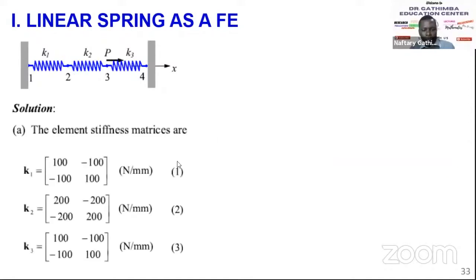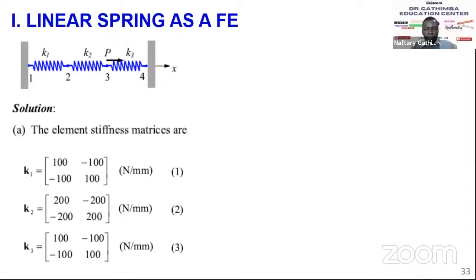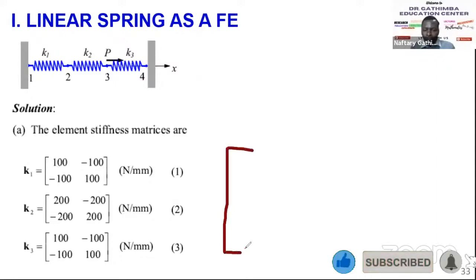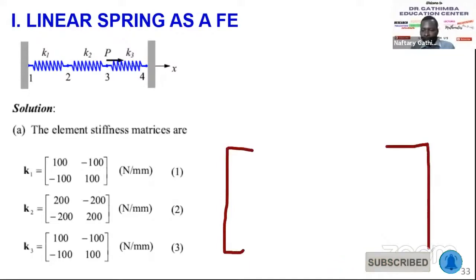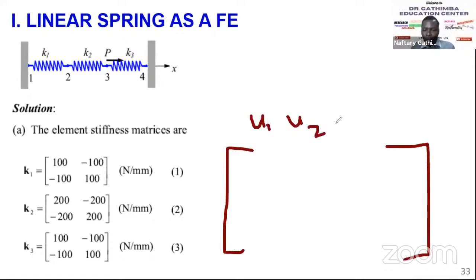We now have K1, K2, K3. The next step is assembly — you've broken down each element and obtained the elemental stiffness matrices, and now you want to assemble them to get the global stiffness matrix. My approach is the superposition method so that you don't have to start from force equilibrium. I set up a 4×4 matrix labeled u1, u2, u3, u4 along both axes since we have four nodes.